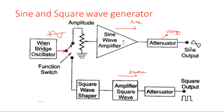The output is a sine waveform. If the function switch selects the second section — square wave generation — the first block is the square wave shaper. This block converts the sine waveform to a square waveform. It can use either a comparator circuit or a Schmitt trigger.